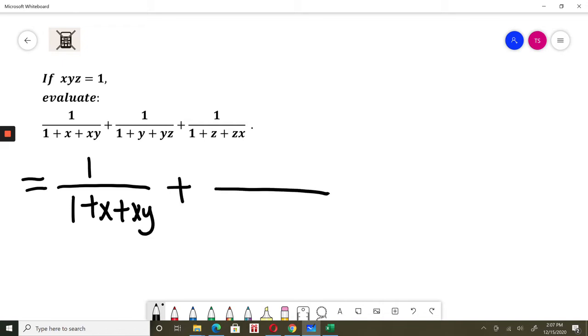In the second part, I want to make xyz because I want to use xyz from this part. So I will multiply numerator and denominator times x. In numerator, it will be just x. 1 times x is x. In denominator times x.